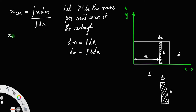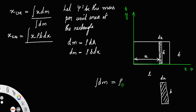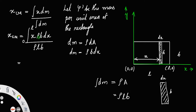Now, substituting that in the formula: x_cm is equal to the integral of x dm, where dm = ρ·b·dx, divided by the integral of dm. The integral of dm means the total mass of the rectangle, which equals mass per unit area into total area, that is ρ into l·b. So the integral of dm equals ρ·l·b. Since x varies from 0 to l, the limit of the integral is 0 to l. We can take ρ and b outside as constants, giving the integral from 0 to l of x dx, divided by ρ·l·b.